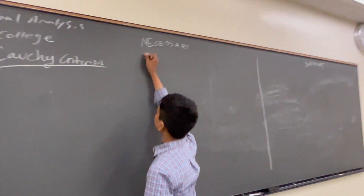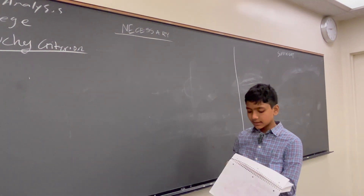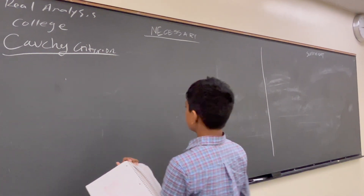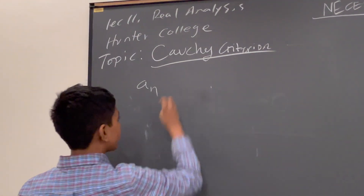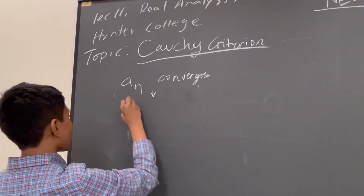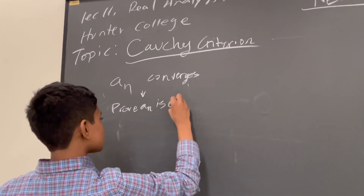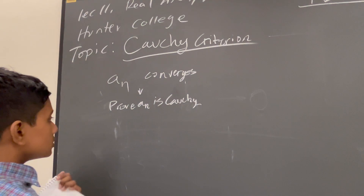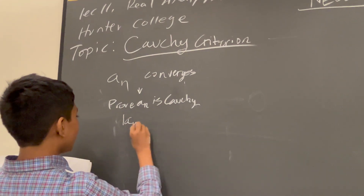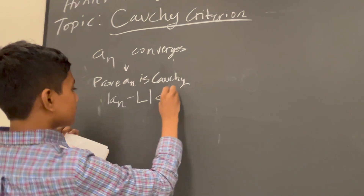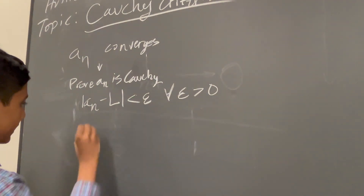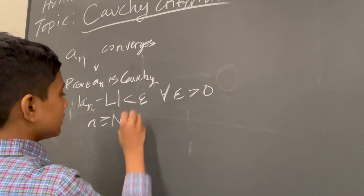Let's start with the necessary proof — this is actually the easier half. Suppose that a_n converges; that's the problem statement. Prove that a_n is Cauchy. Suppose a_n converges. Then that means |a_n − L| is less than epsilon for all epsilon greater than zero, if n is greater than or equal to some N in the natural numbers — the usual routine.